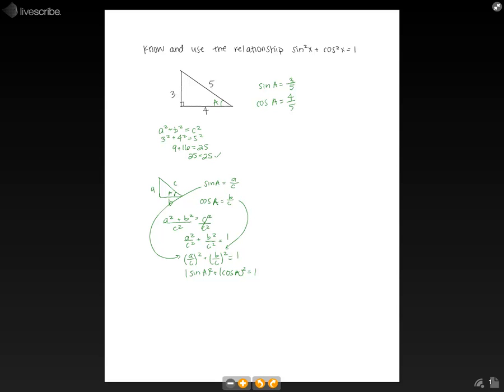So now if we plug that into our equation, we would have sine A squared, which is 3 fifths squared, plus cosine A squared, which is 4 fifths squared, which would equal 1.